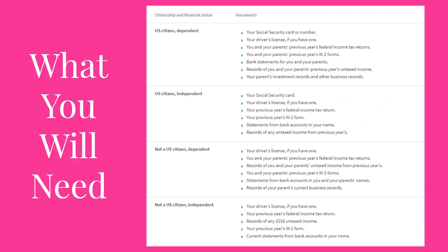Depending on your citizenship status, along with being a dependent or independent individual, you will need different things. Most people going into college straight out of high school are going to fall into the first category: U.S. Citizen Dependent. Most non-traditional students are going to fall into the second category, which is U.S. Citizen Independent. Each category will list the documents that you will need to complete your FAFSA application.